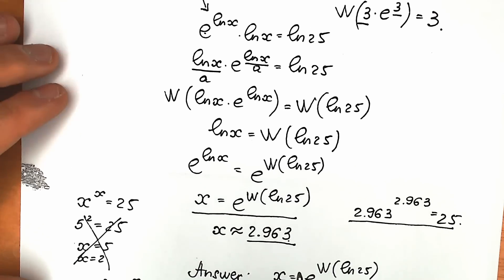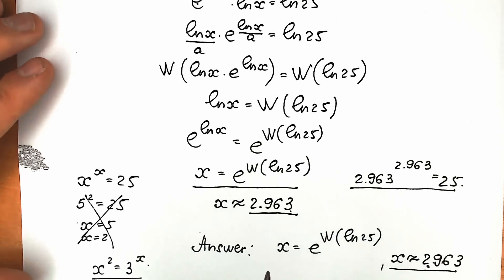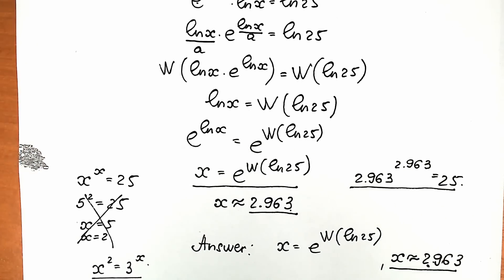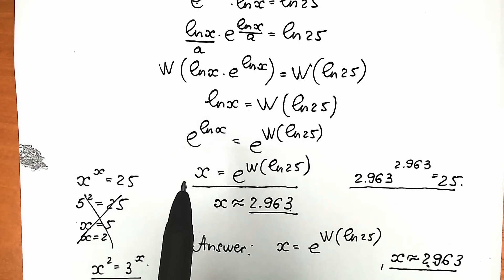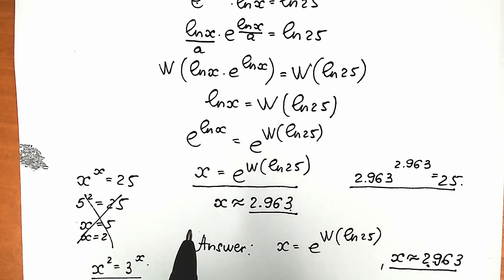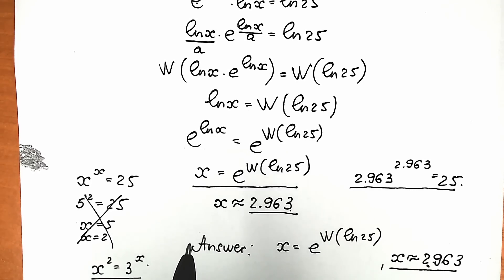I hope you understand my explanation and learned something new. This is a very interesting question from a math perspective because it includes a great natural log property and the Lambert W function, which is really great to practice. If you have your own solution, your own fast methods, or any notes — or if you spot a bad step somewhere — please write your response down in the comment section. It will be really interesting to exchange information, whether you're a teacher or a student.